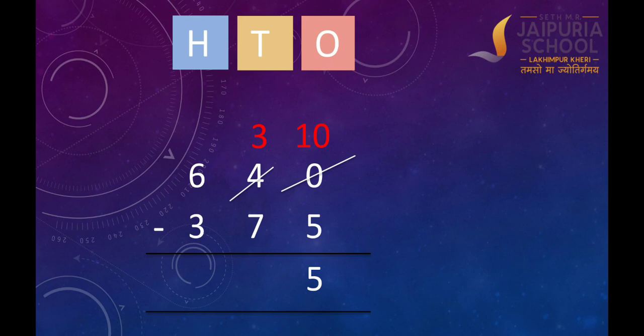Now look at the tens column. We have to subtract 7 tens from 3 tens, but we do not have enough tens to subtract. Let's borrow 100 so that 5 hundreds are left. As we know that 100 is equal to 10 tens, so 10 tens plus 3 tens is equal to 13 tens. Now we have enough tens. Let us subtract 7 tens from 13 tens. 13 tens minus 7 tens is equal to 6 tens. Let's write 6 under the tens column.